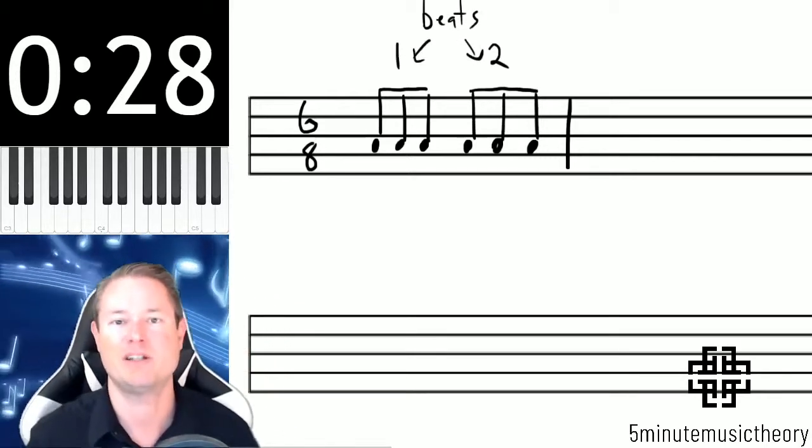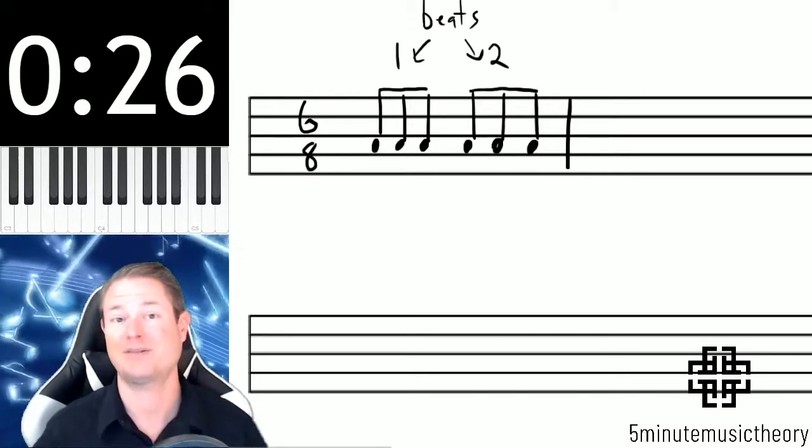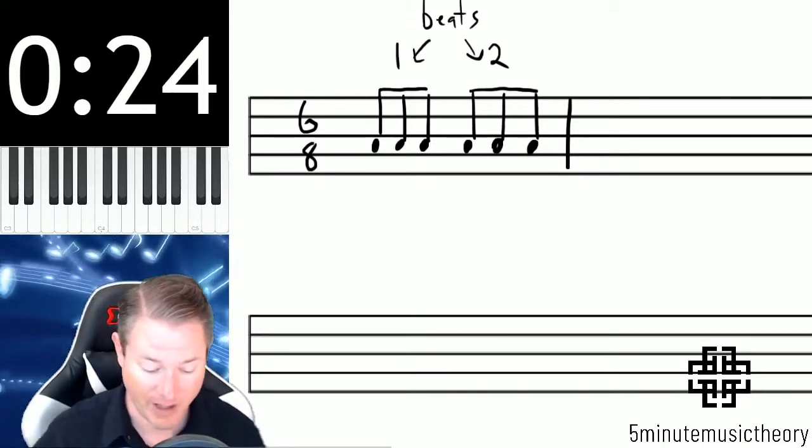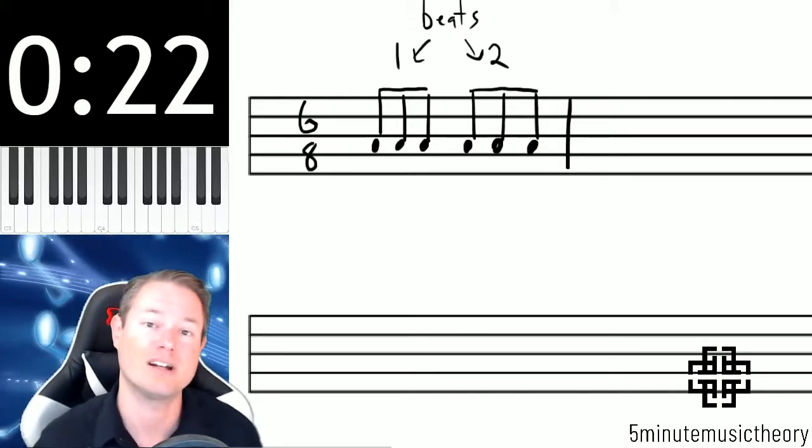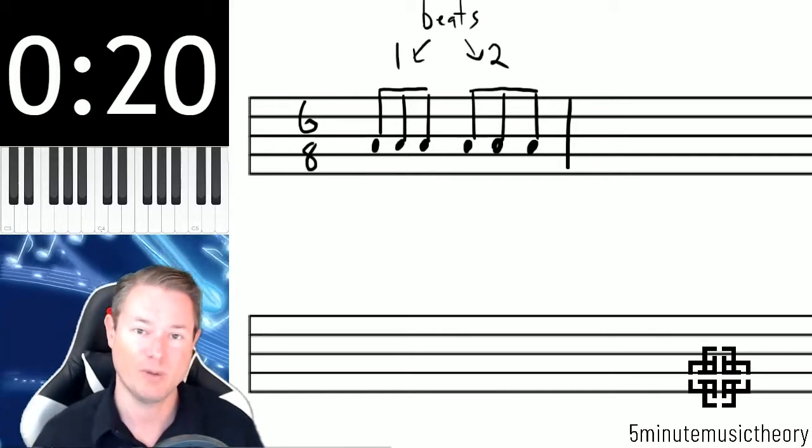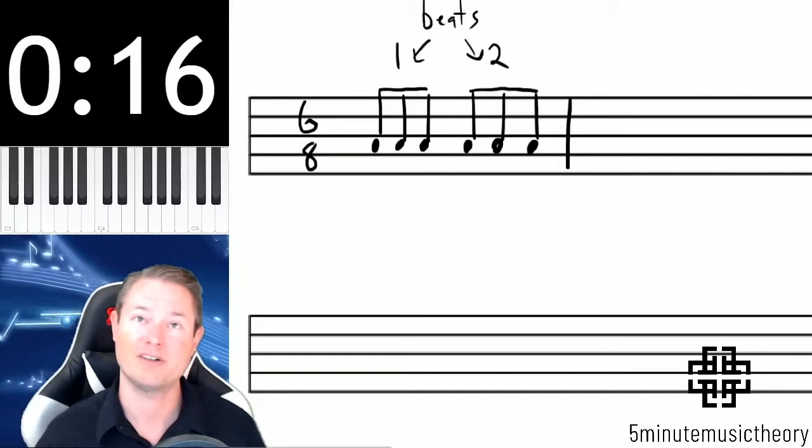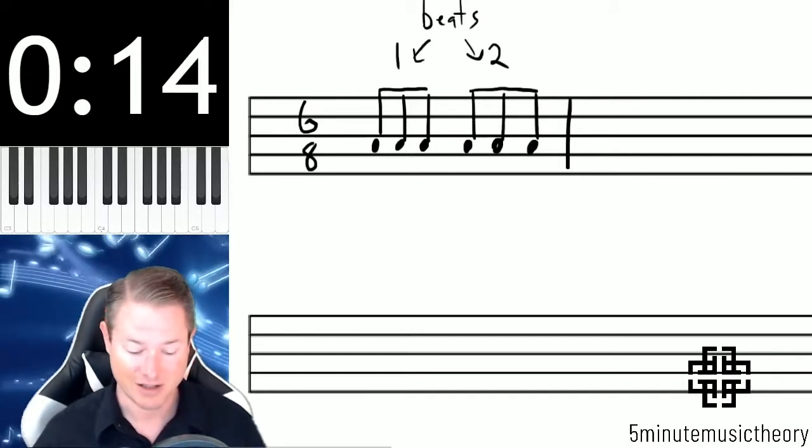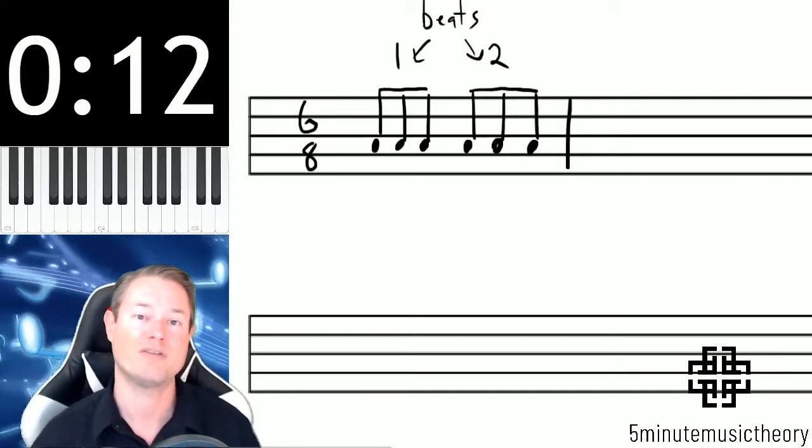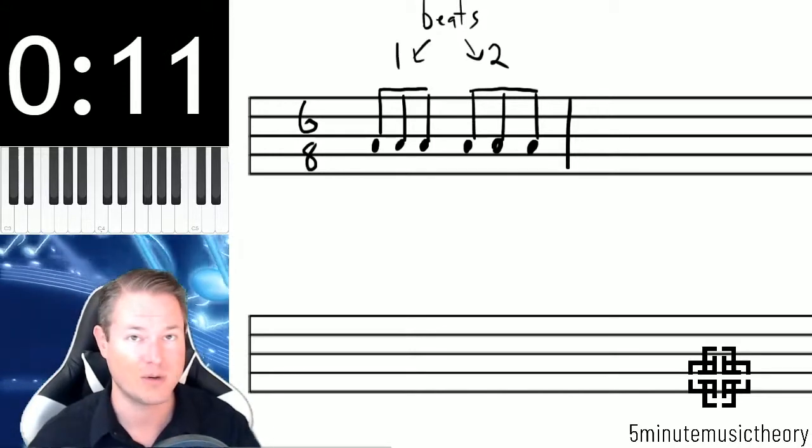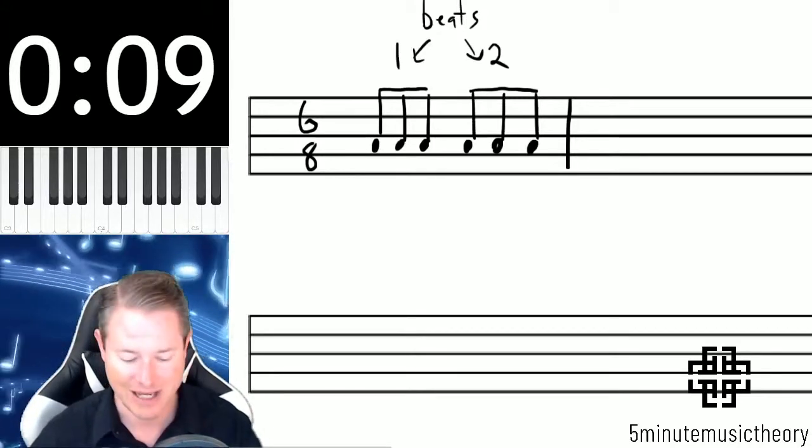So the big difference between simple and compound, and in fact really the only difference between simple and compound meter, is how many notes are in the subdivisions. In simple meter, there are 2 subdivisions per beat, and in compound meter, there are 3 subdivisions per beat. So the tricky thing about this is to determine first which kind of meter you're dealing with, so then you know what the numbers actually indicate.